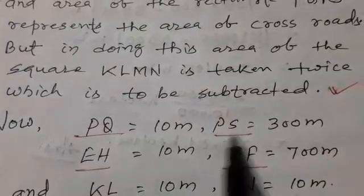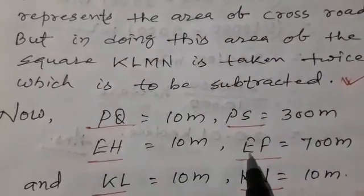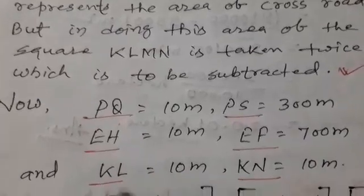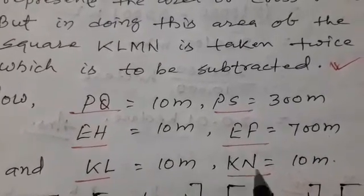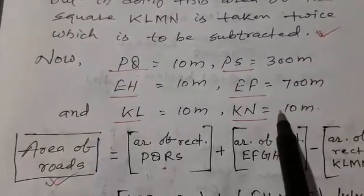Now, PQ equals 10 meter, PS equals 300 meter, EH equals 10 meter, EF equals 700 meter, KL equals 10 meter, KN equals 10 meter. All information are given in the question.